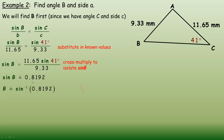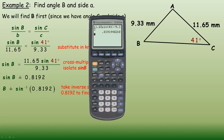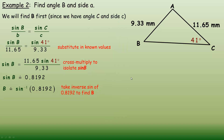To find angle B we take the inverse sine of 0.8192. In the graphing calculator: inverse sine of 0.8192, closing the bracket. That gives pretty well exactly 55 degrees, so angle B is 55 degrees.